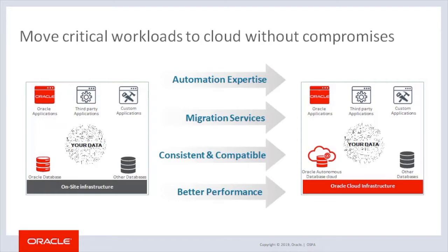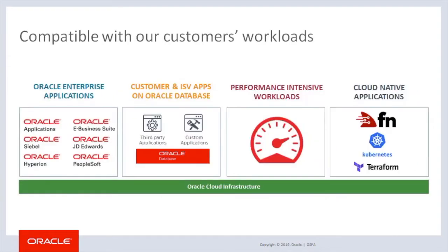We built a cloud network with massive interconnect bandwidth and no resource oversubscription to ensure that noisy neighbors isn't an issue and high performance we deliver is invariable depending on external factors. We provide a service-level objective that covers availability, performance, and manageability. There are four main workload categories our customers and partners run on our cloud. First is to move their implementations of Oracle applications to the cloud — often complex, customized environments. We give these customers an easy path to move apps as they run in their own data centers to the cloud, where they get the same or better performance than on-premises while no longer wasting time on hardware refreshes, system upgrades, or other mundane tasks.